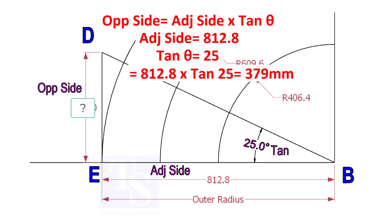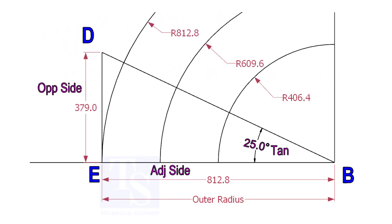812.8 into tan 25 equals 379 millimeters. Draw the line ED vertically and the slant line DB.